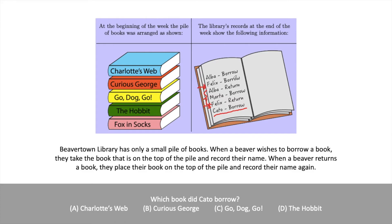Felix borrows his book after Alba borrows hers. Since Alba is the first person and the only person to borrow before Felix, she borrows Charlotte's Web, so Charlotte's Web is no longer in the stack. Felix then borrows the next book — Curious George. When Felix returns his book, he returns Curious George. Since Cato takes the book just put on top of the stack, Cato takes Curious George — the same answer as before, but much more efficiently.